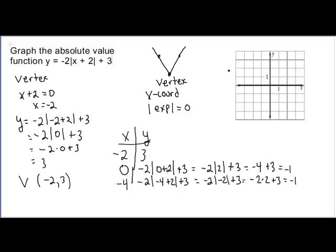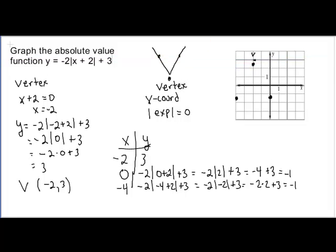Alright. So if we plot our points, we have the vertex at negative 2, 3. Put a little v here to let me know it's the vertex. I have a point at 0, negative 1, and I have my point here at negative 4, negative 1. And we can draw our v shape.